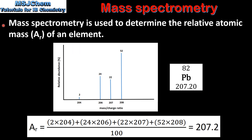Mass spectrometry is used to determine the relative atomic mass of an element. Using a mass spectrum, we can calculate the relative atomic mass. Each peak on the spectrum shows the mass to charge ratio on the x-axis and the relative abundance on the y-axis. To calculate the relative atomic mass, we multiply the mass to charge ratio by the relative abundance for each peak, add them together, and divide by 100.